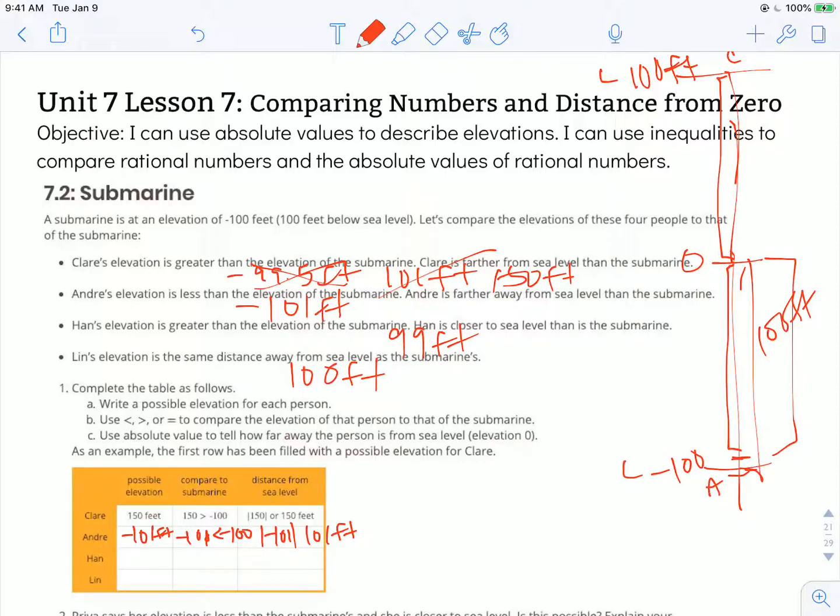Han is, we decided, at 99 feet. 99 is greater than negative 100, and the absolute value of 99 is 99 feet. He's 99 feet from sea level.